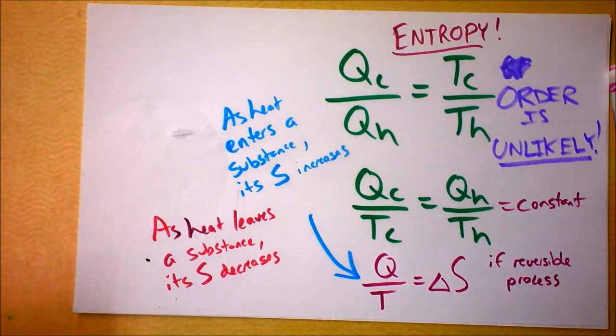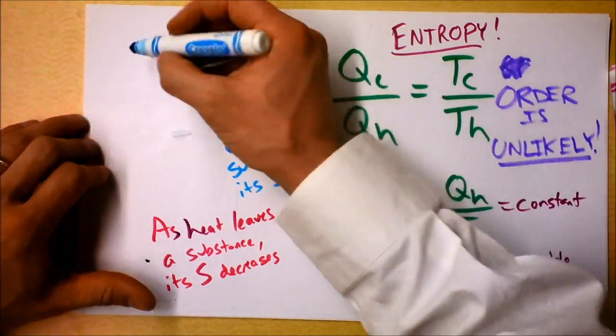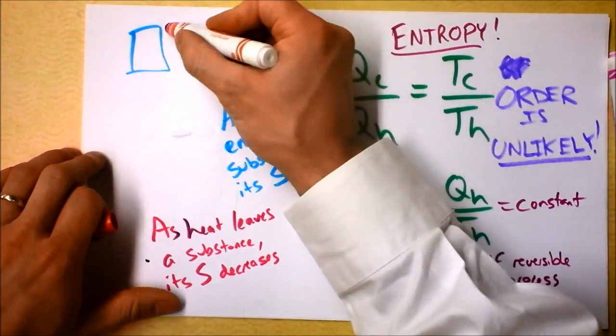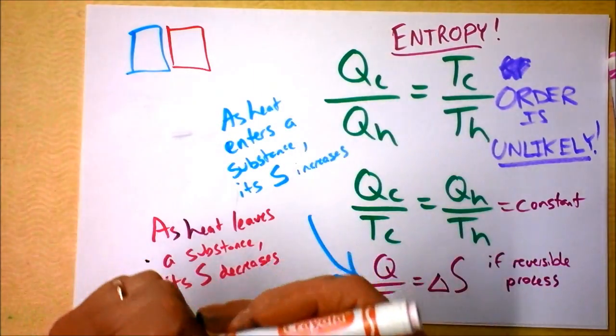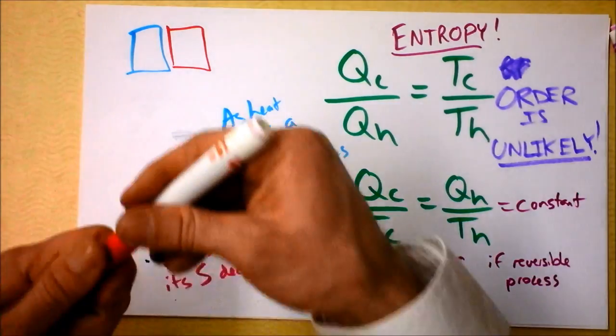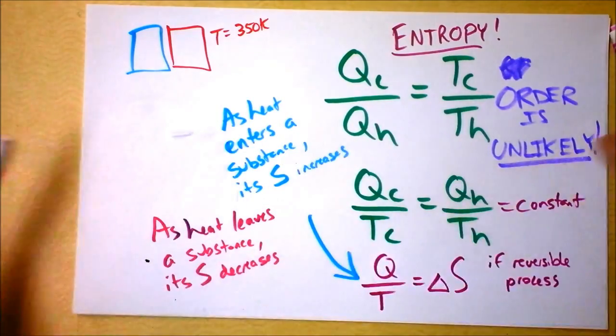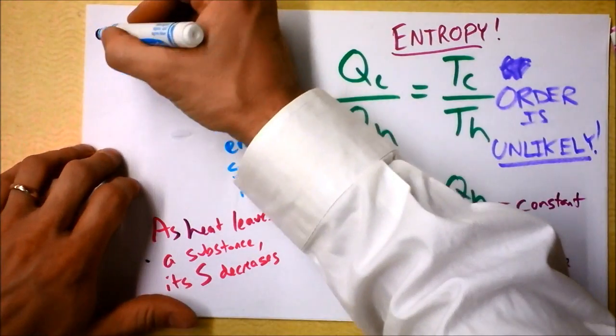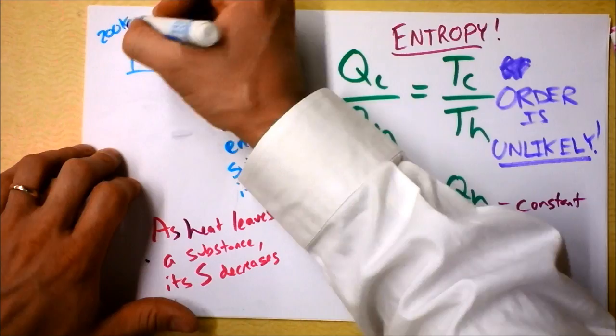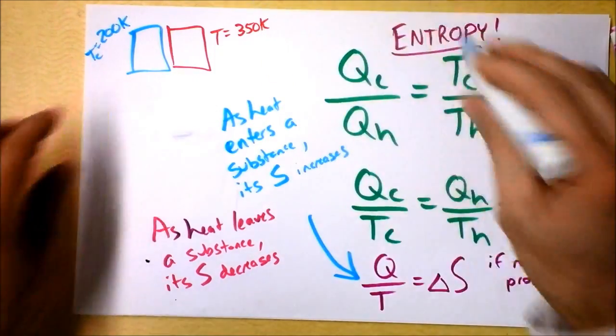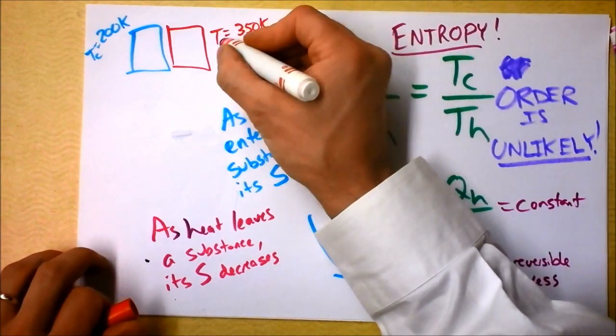But here's the problem. If you take two things and one of them is cold and the other one is hot, and you set them next to each other, then the temperature... Let's give these guys some temperatures. Let's say that this guy is 350 Kelvin and this guy over here, the blue one, is 200 Kelvin. I agree, T cold is 200 Kelvin, T hot is 350 Kelvin.